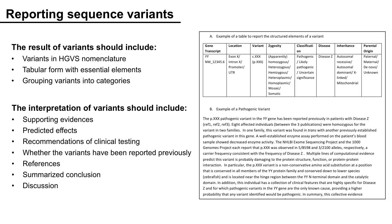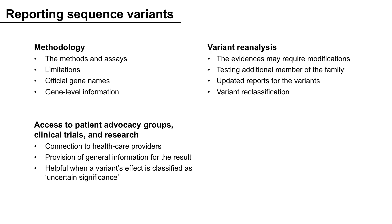The ACMG guidelines also contains information for reporting variants and special considerations. When you report a variant, the result should include variants in HGVS nomenclature, a tabular form with essential elements, and grouping of variants into categories. The interpretation section should also include supporting evidence, predicted effects, recommendations for clinical testing, whether the variants have been reported previously, references, a summarized conclusion, and discussion. You should also provide information on the methodology, such as the methods and assays, limitations, official gene names, and gene-level information. It is recommended to have access to patient advocacy groups, clinical trials, and research.